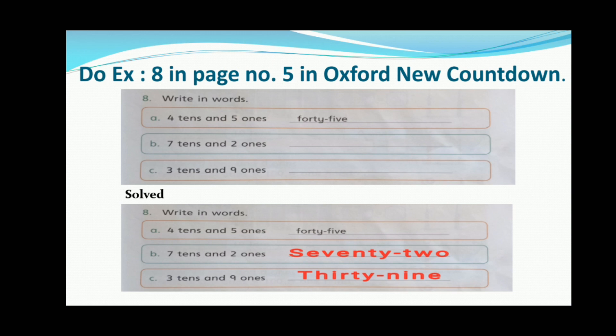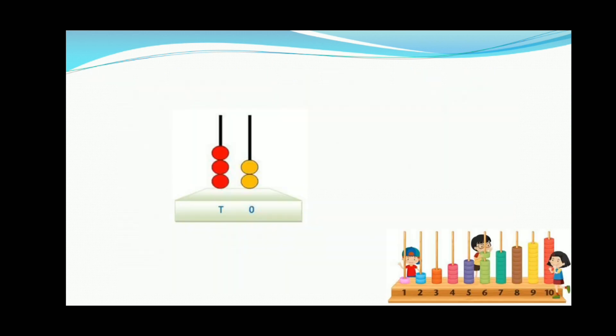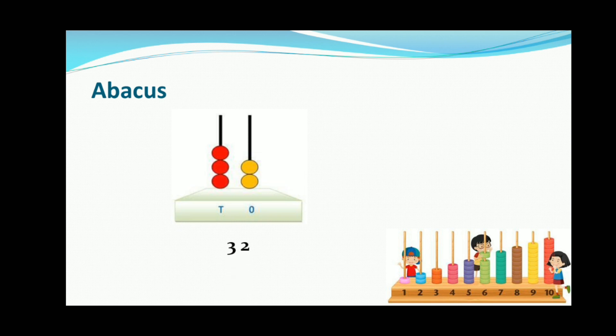Now let's learn about the abacus by counting the beads given in tens and ones. Here you can see the tens column has 3 beads and the ones column has 2 beads. So we write this as 32.